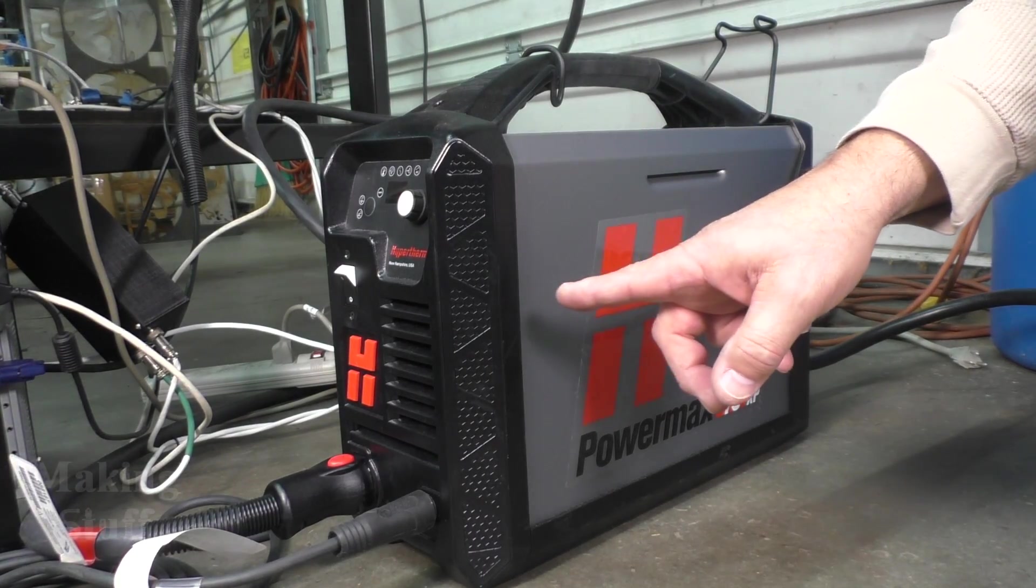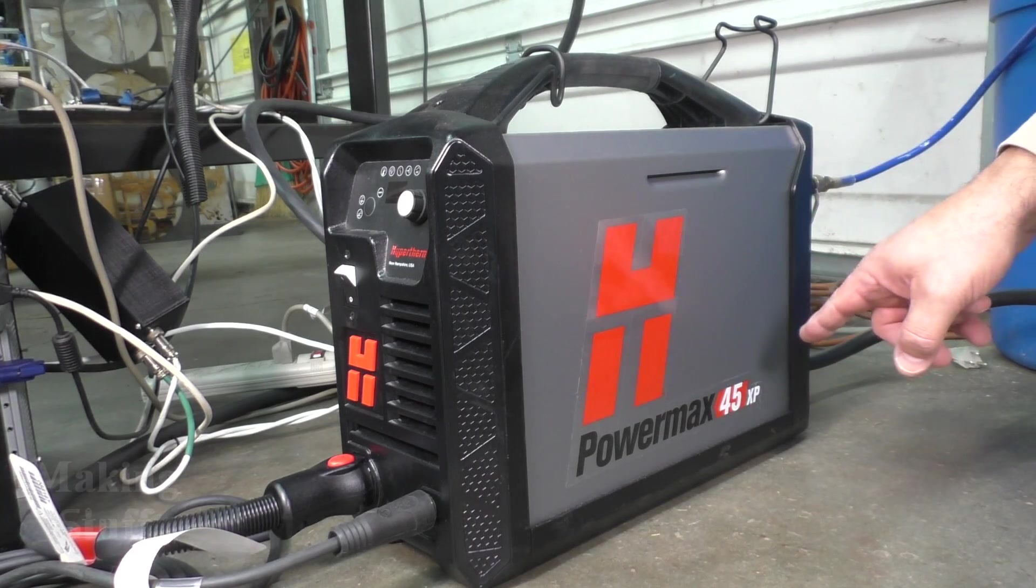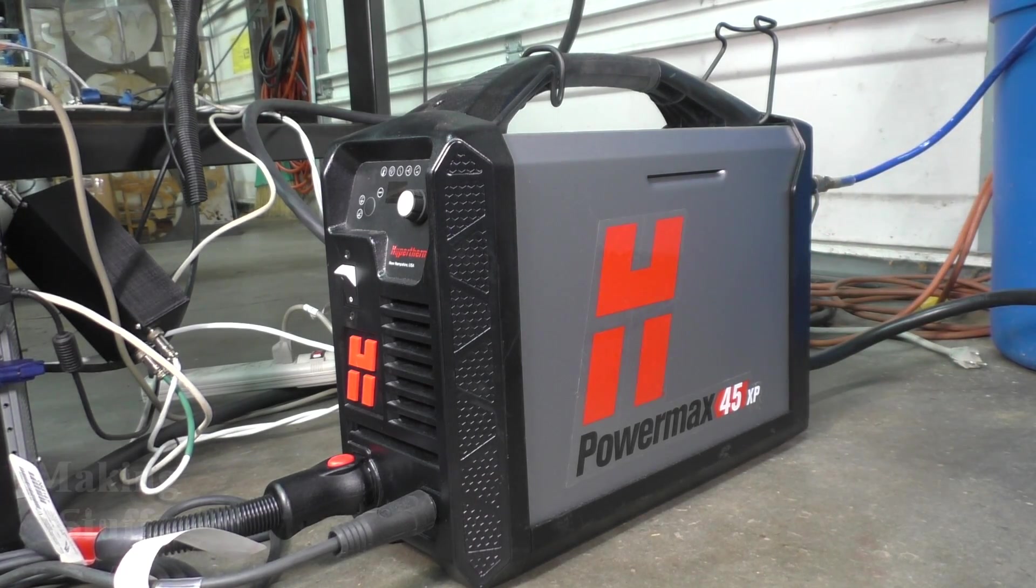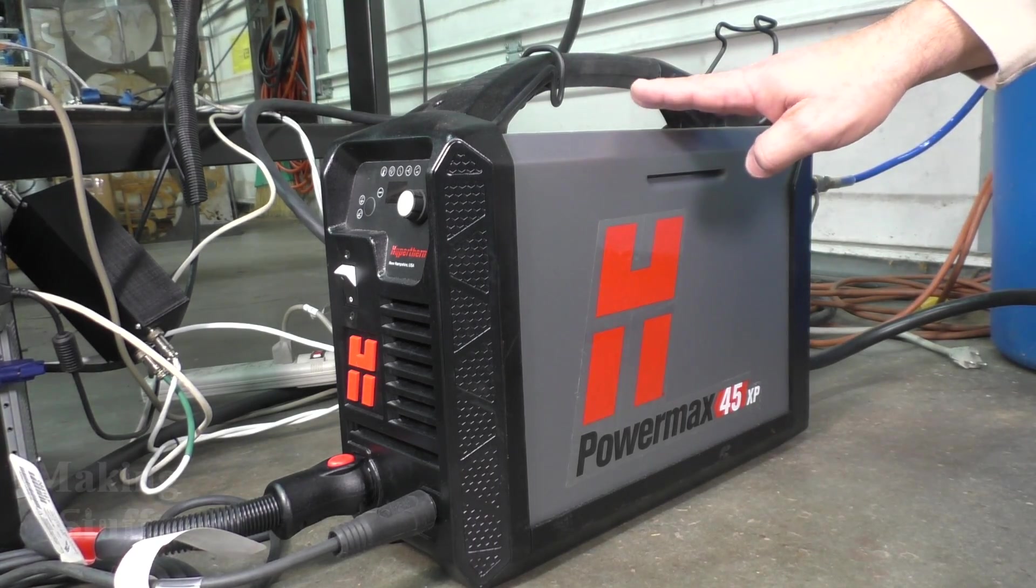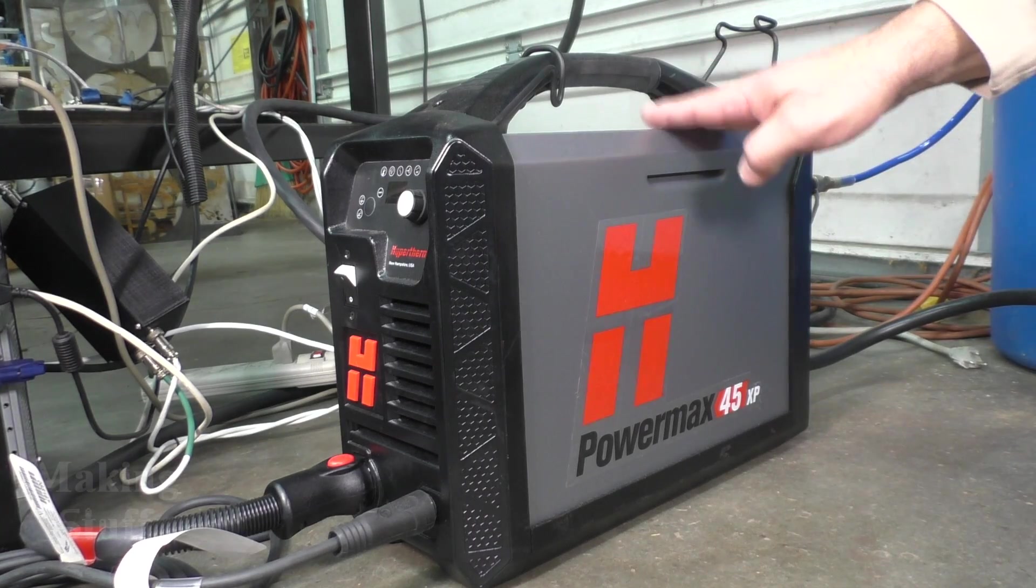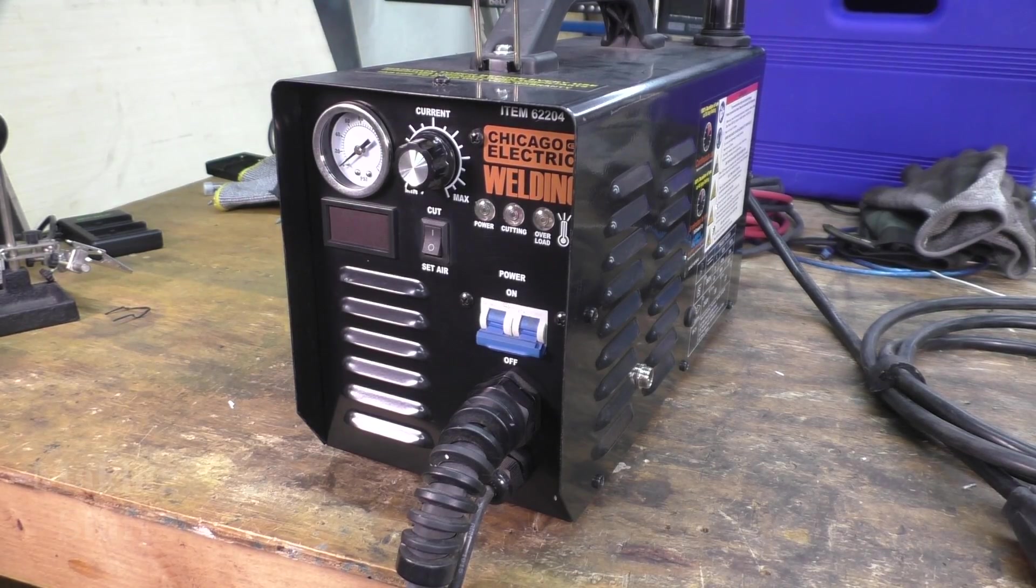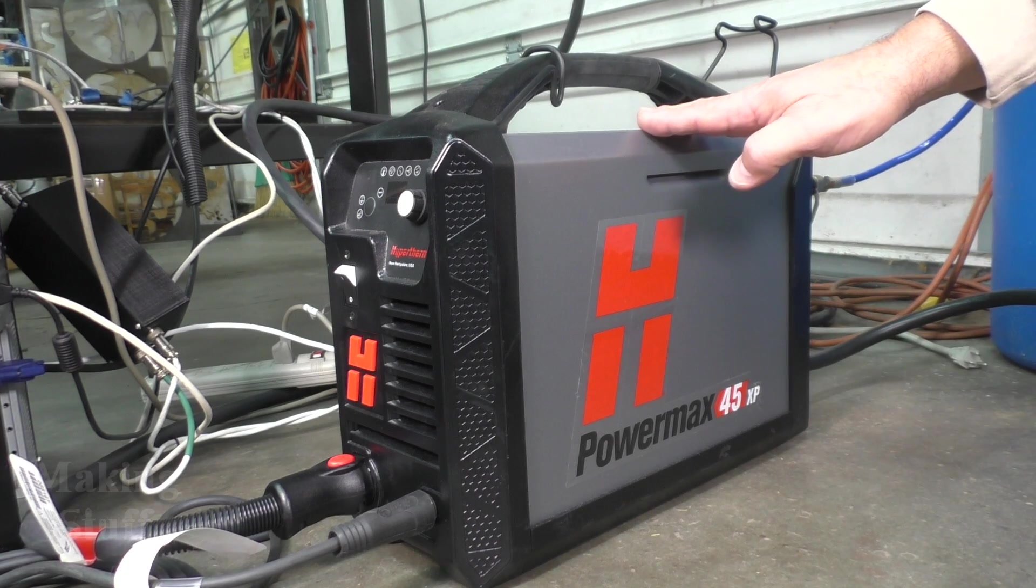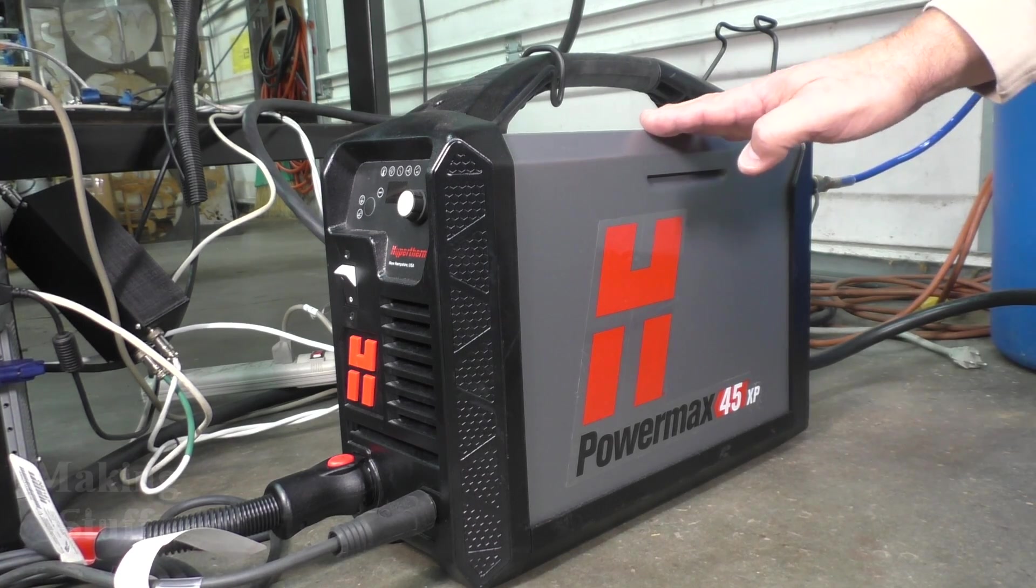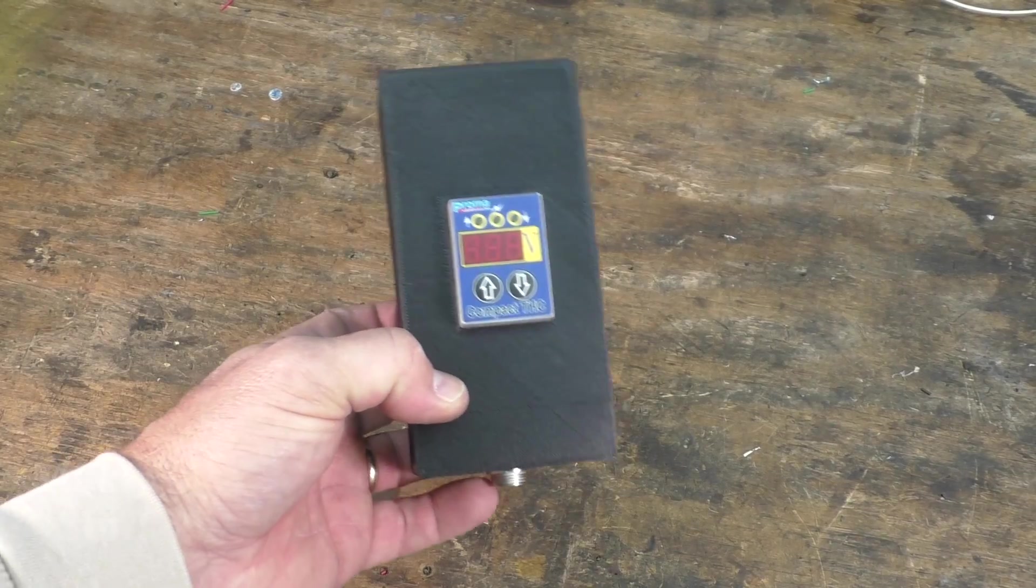Here's another update: I'm adding a Hypertherm Powermax 45 XP, and this is going to add a whole lot more features. I've also added a machine torch. This will do a lot more than the Harbor Freight plasma cutter would ever do. Now don't get me wrong, that plasma cutter did work well for a year and a half, but it's just time to upgrade because I'm starting to get some paying jobs rolling in and I just needed something that would make much better cuts.